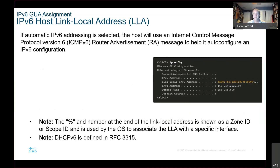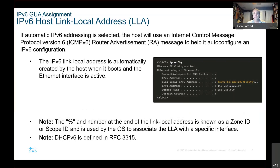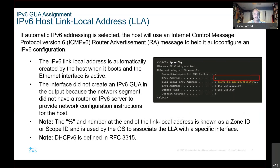In this case, you're seeing that it has not been issued an address yet. So it needs to go through the steps that we are going to configure. The interface did not create an IPv6 GUA in the output because the network segment did not have a router or IPv6 server to provide network configuration instructions for the host.